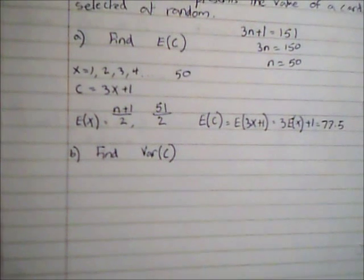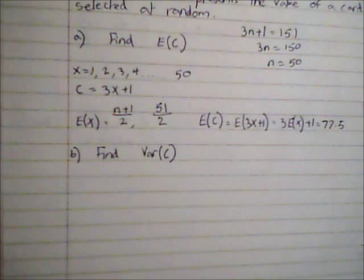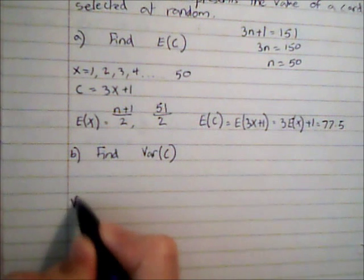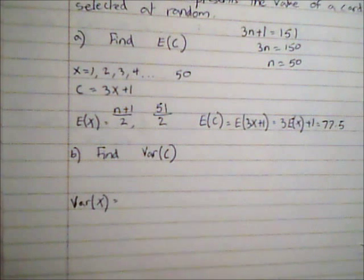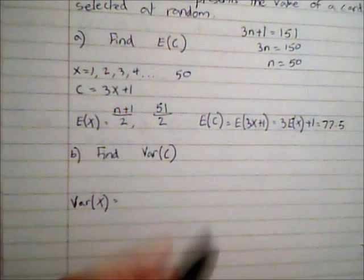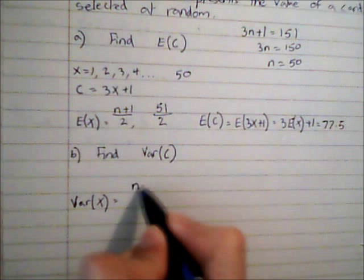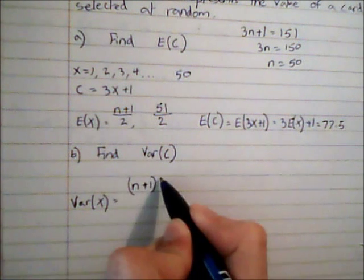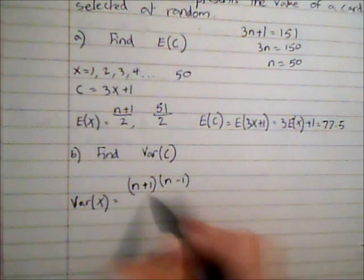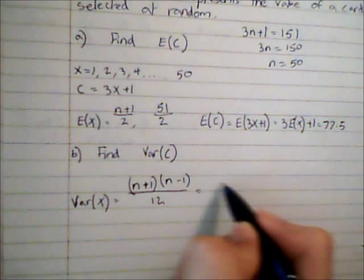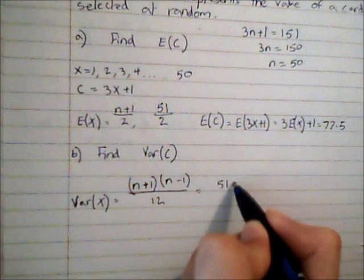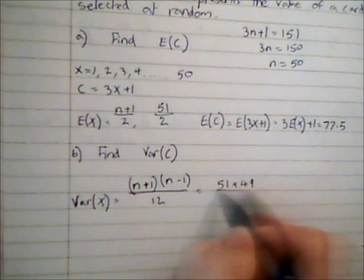How can I find Var(C)? First of all, I'm going to find Var(x) and then use the same coding as I had before. In this case, Var(x) when we have this type of distribution is (n+1)(n-1)/12. So this is going to be 51 multiplied by 49 over 12, that's 833/4.